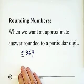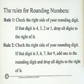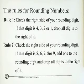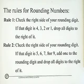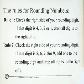There are two rules to follow. The first one is: check the right side of your rounding digit. If that digit is 4 or less — so 4, 3, 2, or 1 — drop all digits to the right of it.